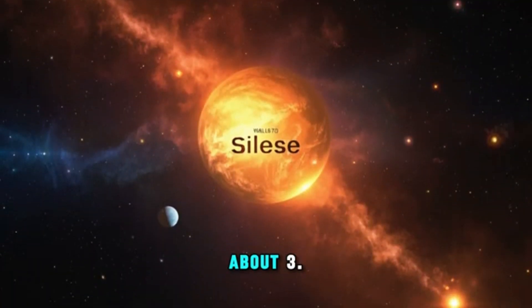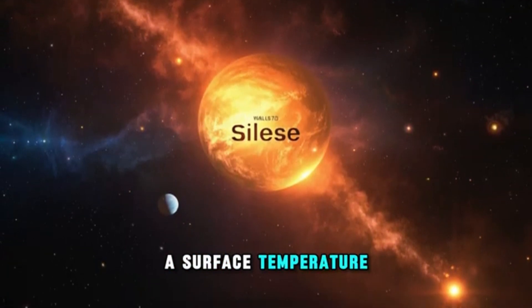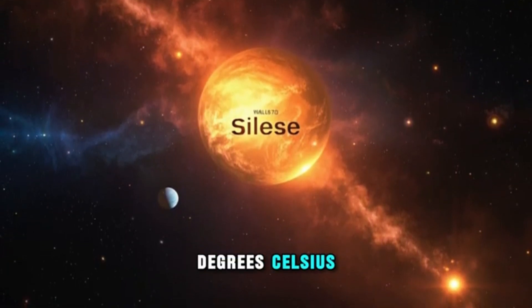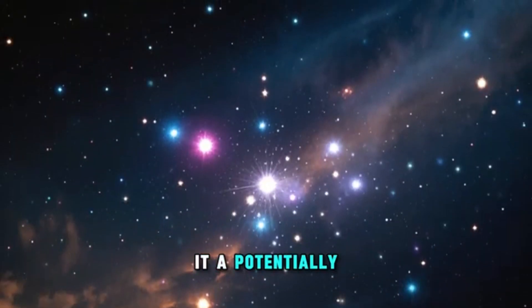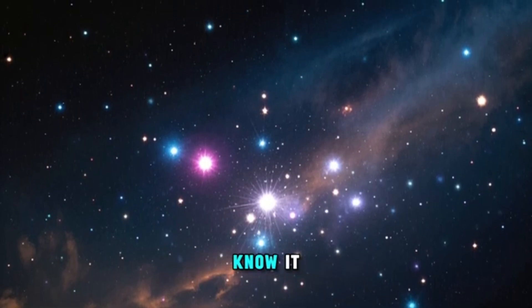Gliese 581g is thought to be about 3.5 times the mass of Earth and has a surface temperature ranging from minus 31 to 14 degrees Celsius. These conditions make it a potentially suitable environment for liquid water to exist, which is a crucial ingredient for life as we know it.